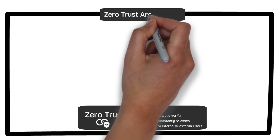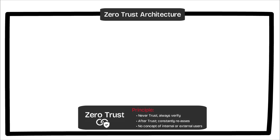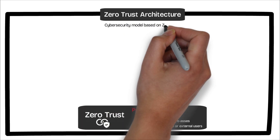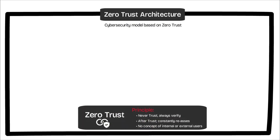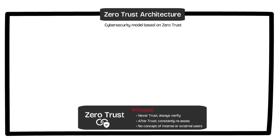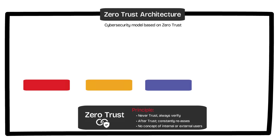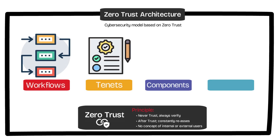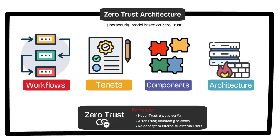A zero trust architecture, as defined by NIST 800-207, is a cybersecurity architecture built on zero trust. It provides a set of guiding principles that organizations can use to effectively adopt and implement zero trust. This includes guidance on workflows, system design, and key architectural components that we'll review later.